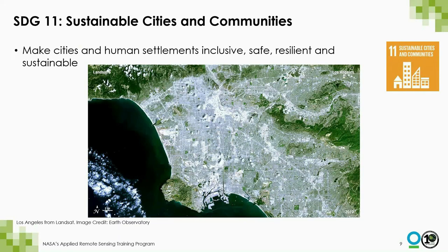Today we're really going to focus on SDG 11, sustainable cities and communities. Today, more than half the world's population live in cities, and by 2030 it's projected that 6 in 10 people will be urban dwellers. Cities are really important for managing the SDGs — they can be incubators for innovation and growth with drivers of sustainable development. With satellite imagery, we can map cities and urban areas. This is a great image of Landsat of the Los Angeles area, showing how we can use satellite imagery to map and identify urban land areas.